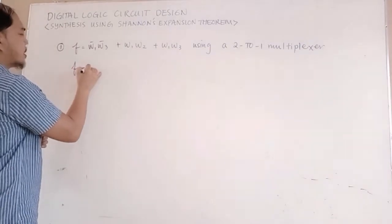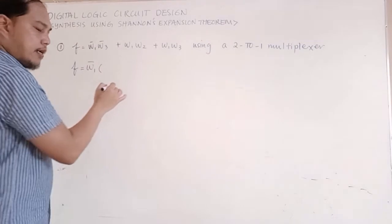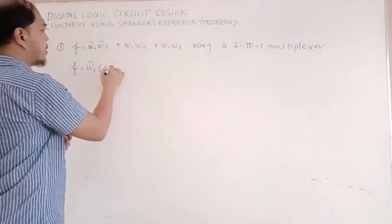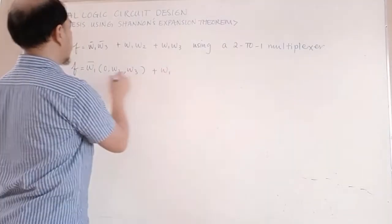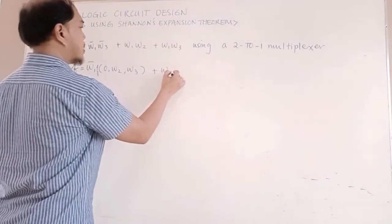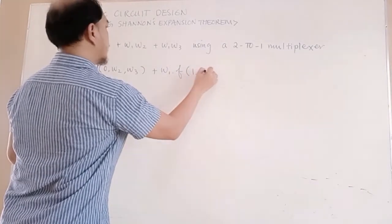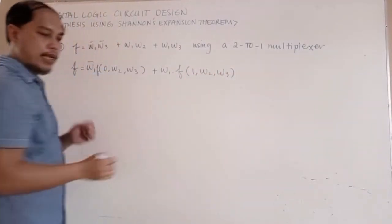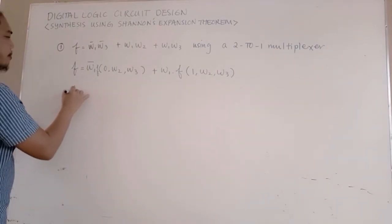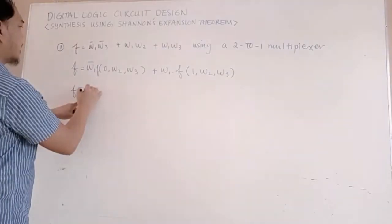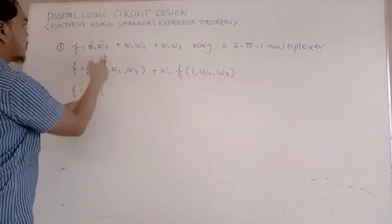So F equals W1-bar AND its co-factor F(0, W2, W3) plus W1 AND its co-factor F(1, W2, W3). Substituting W1=0 gives co-factor W2 plus W3-bar, and substituting W1=1 gives co-factor W2 plus W3.